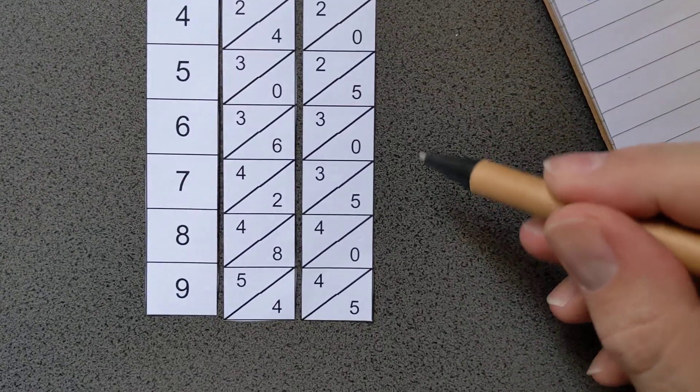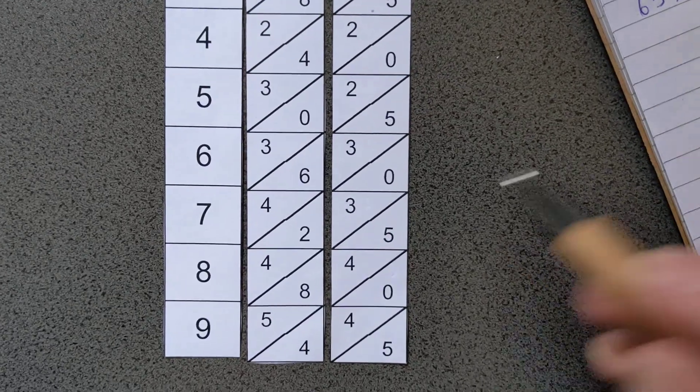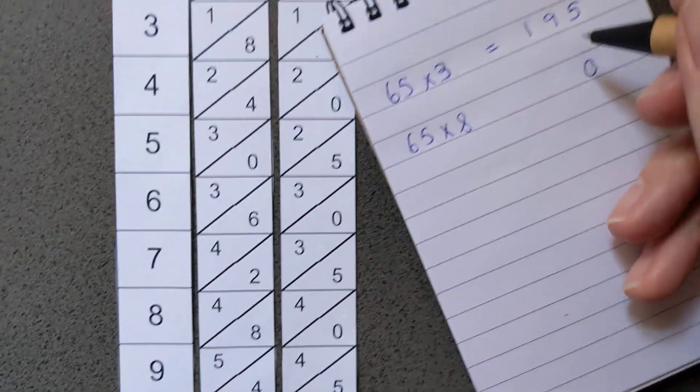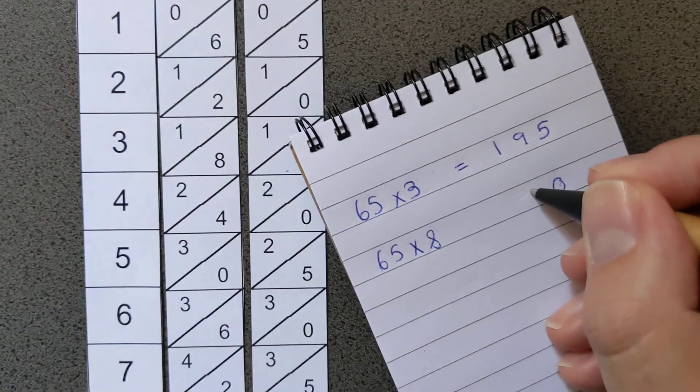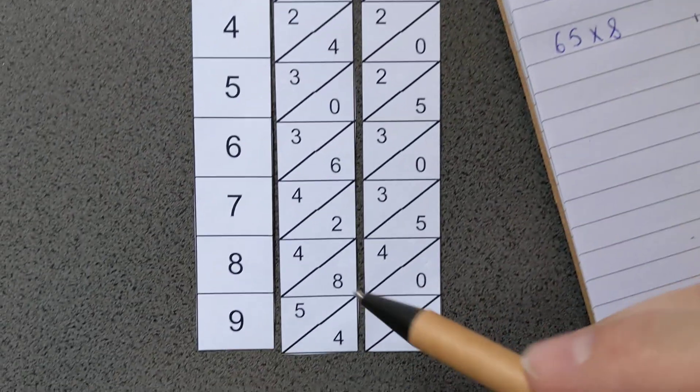The right-most digit is the 0, so that's our units. Then in the next column, in the diagonal section, we've got an 8 and a 4. Now 8 and 4 is 12, so what we would do is we'd write down the 2 and carry the 1.